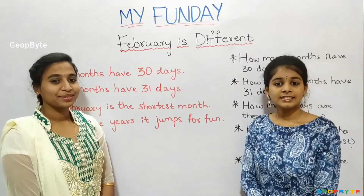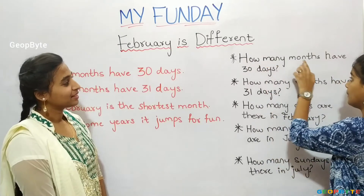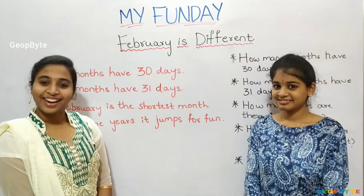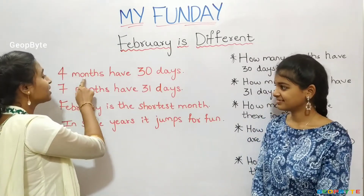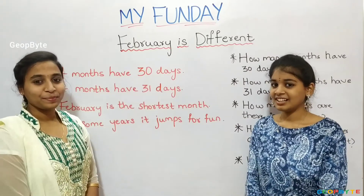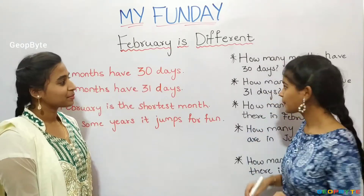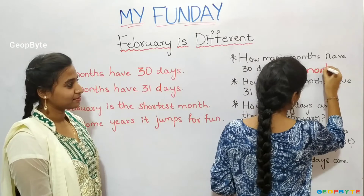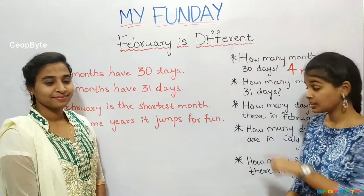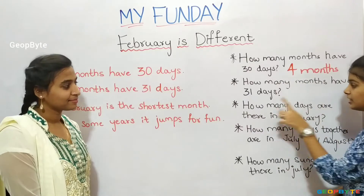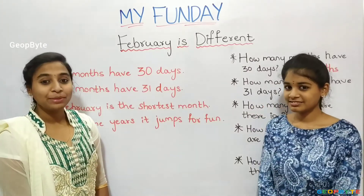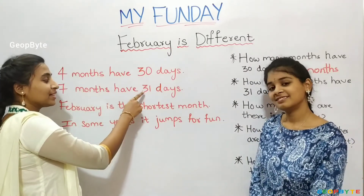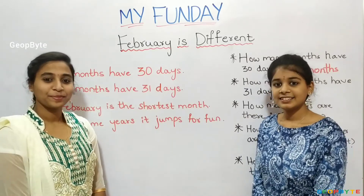Now let us see some questions. How many months have 30 days? Four months have 30 days. Let us write: 4 months. How many months have 31 days? Seven months have 31 days. Let us write: 7 months.